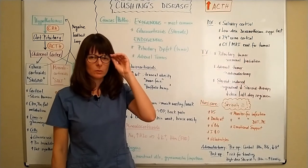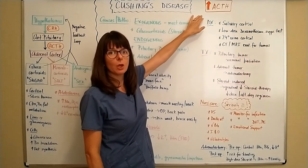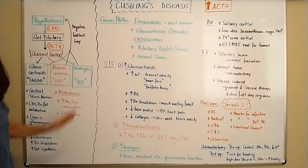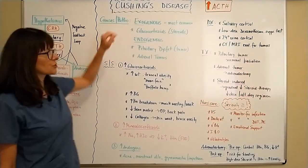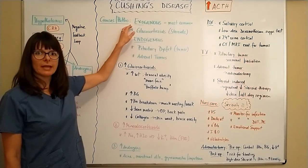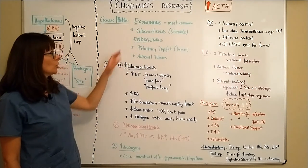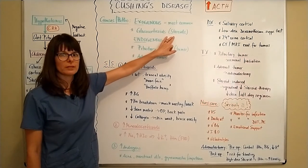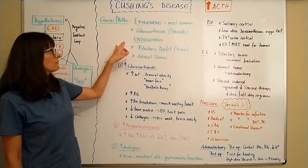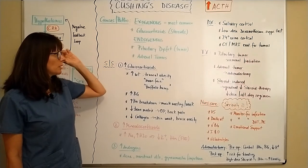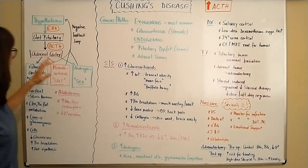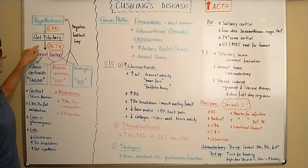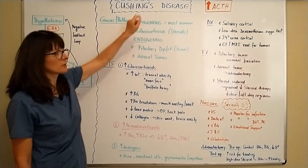Now let's look at Cushing's disease, which involves an increase in adrenocorticotropin hormone. With that increase, sugar, salt, and sex hormones are all going to go up. Causes of Cushing's disease are most commonly exogenous in nature — meaning coming from outside the body — with the most likely culprit being the chronic administration of glucocorticoids, also known as steroids. There can also be endogenous reasons, which would be pituitary or adrenal tumors that cause malfunction and increased ACTH production.